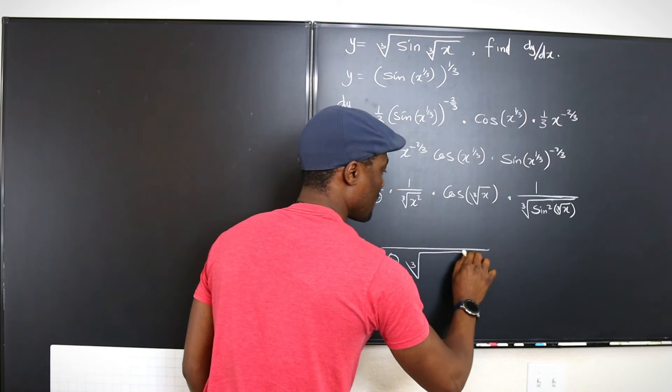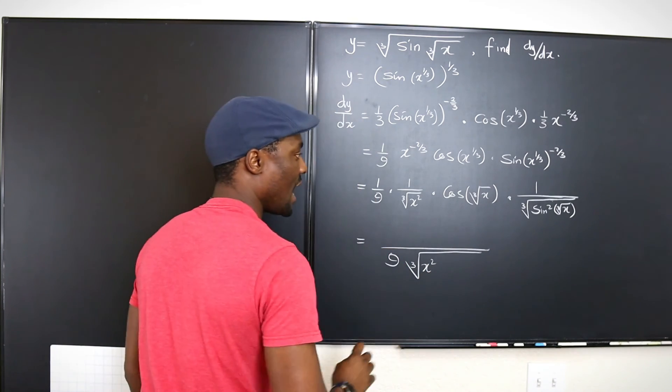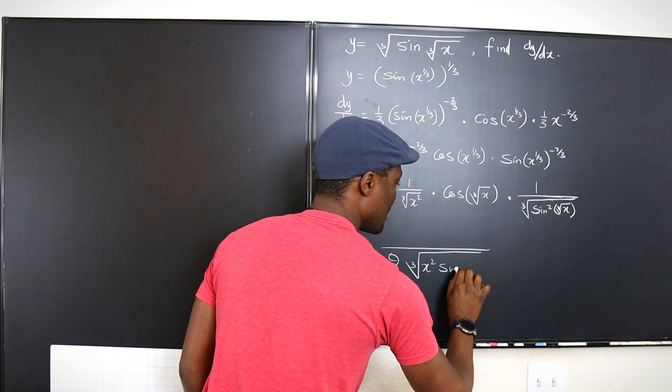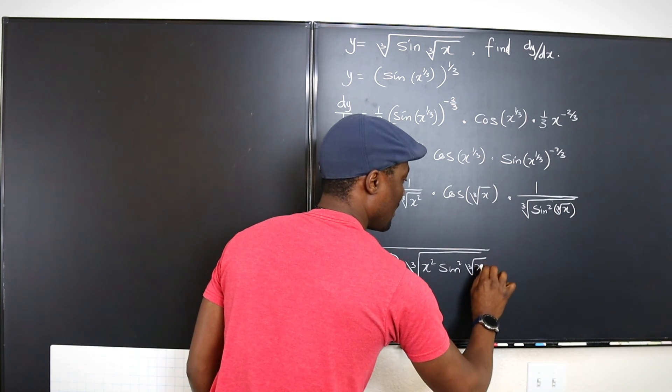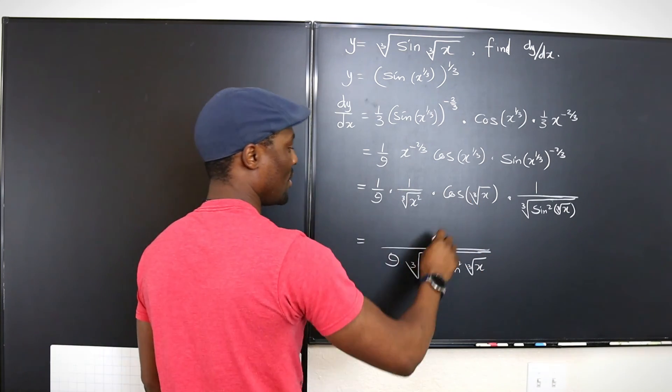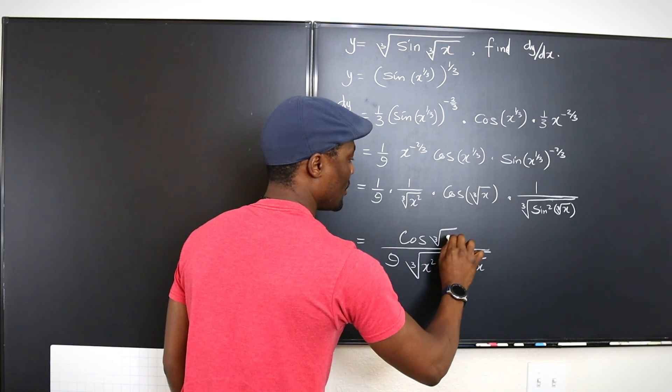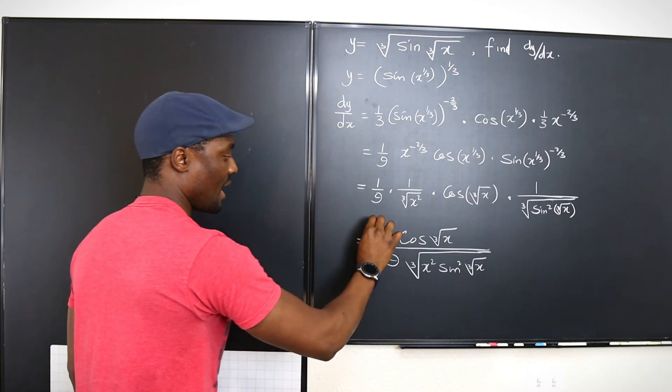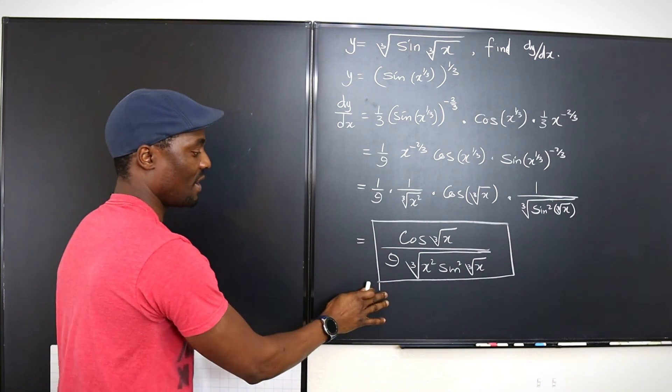and sine squared, cube root of x. Perfect. And on top of it, we're going to have this cosine cube root of x. And that's going to be your final answer.